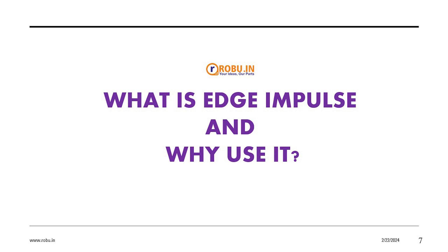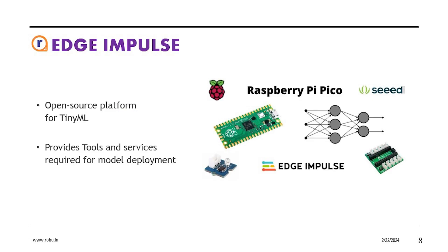So how are we going to develop TinyML for our use case? We are going to use a platform called Edge Impulse. We use Edge Impulse because it provides almost all the necessary tools and services required to develop a machine learning model for a particular device. Most importantly, Edge Impulse is an open-source platform for TinyML development, which is a plus point.